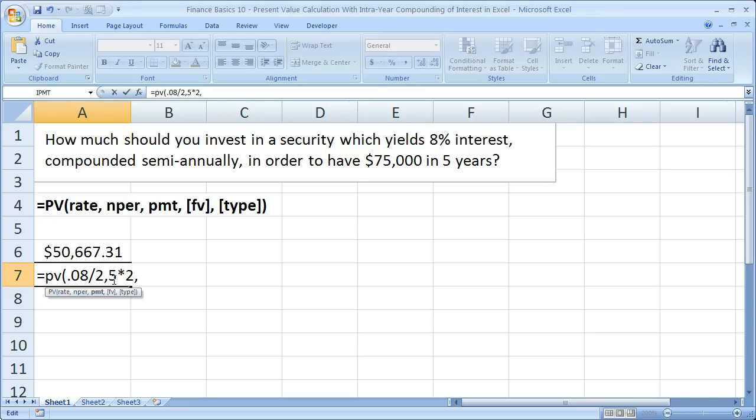Let's go ahead and fill out the rest real quick and I'll show you how to change this up. So payments, we got nothing. So I'm just going to put a 0 there or put another comma to get to the future value. Future value is how much we want in the future, $75,000. So that's it.